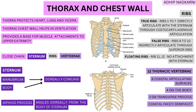Starting with the function: your thorax's main function is to protect the heart, lungs, and the viscera — all the internal organs. Second, the thorax also helps in ventilation as the lungs are present right over here. It also provides a really good base for muscle attachments to the upper extremity — from your clavicle, scapula, and sternum. So inherently your chest wall needs a good amount of stability, but along with stability it also needs mobility because the rib cage has to move in and out to create space for the lungs to expand.